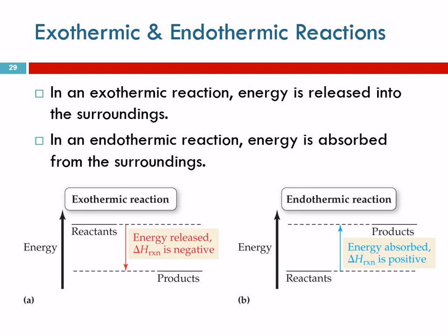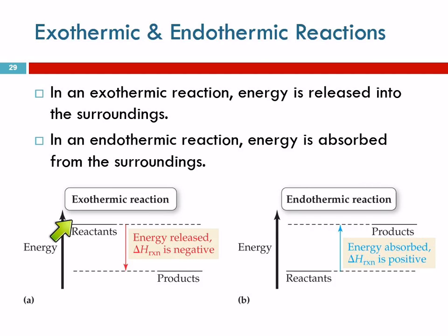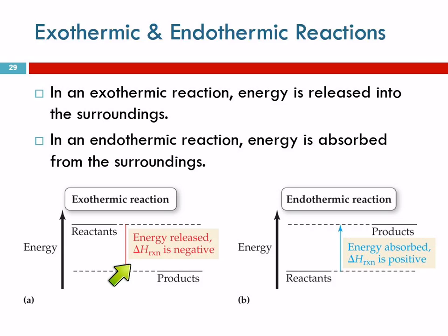In an exothermic reaction, energy is released. We can draw an energy diagram — as we go up on the screen, energy is increasing. In an exothermic reaction, the reactants start out with a high amount of energy, they release some of that energy into the surroundings, and the products now have lower energy. The reactants were high energy; the products are low. Delta H is negative because energy left.